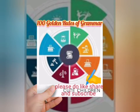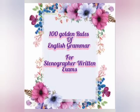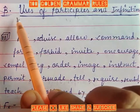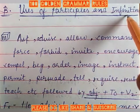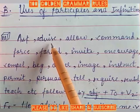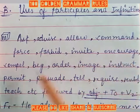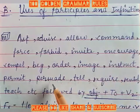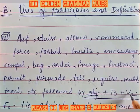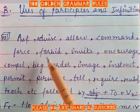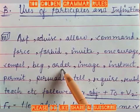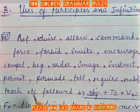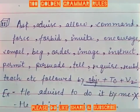Hello to everyone. Today we will start class four, here the topic is a new topic — Point 11: uses of participles and infinitive. Verbs like ask, advise, allow, command, force, forbid, invite, compel, order, instruct, permit, tell, require, teach etc. are followed by object plus 'to' plus verb (second form). This is the order trick for Point 11.